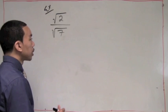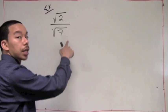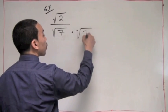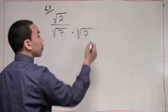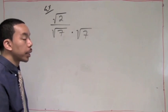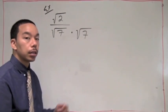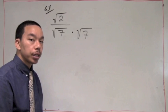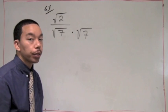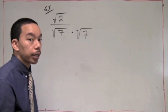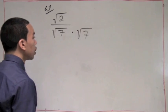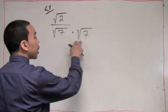I'll say to myself: I can multiply the square root of 7 times another square root of 7. If I did that, we would get the square root of 49, which is 7. Thus it won't be a radical anymore — it'll be the integer 7.